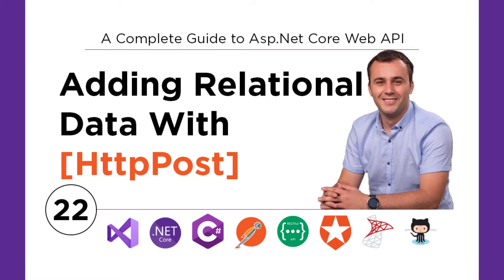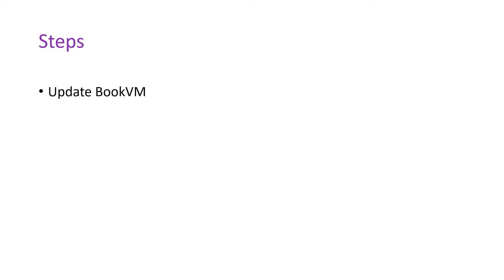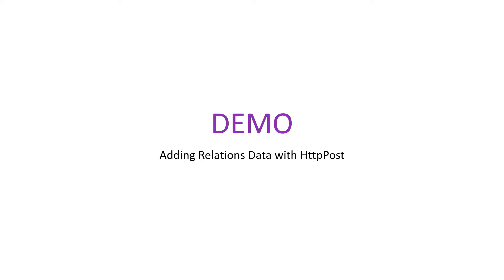We have updated the database schema, so now we need to also update the HTTP POST API endpoint for adding books to the database. For that, you'll first update the BookView model, then next you'll update the AddBook method in the Books service. Then by the end, you'll test all the changes using Swagger. So let us go to Visual Studio and see it in action.